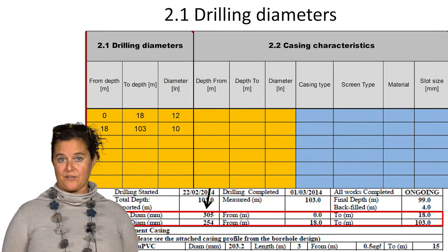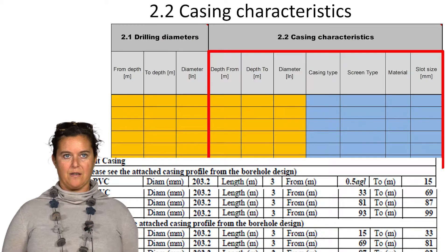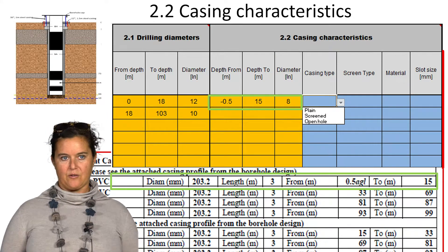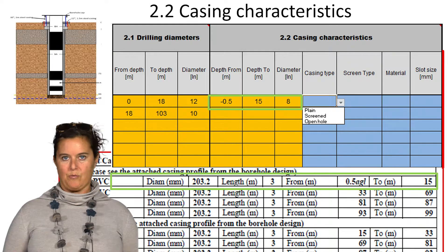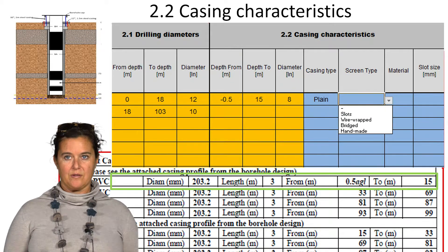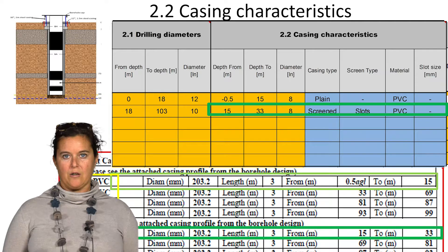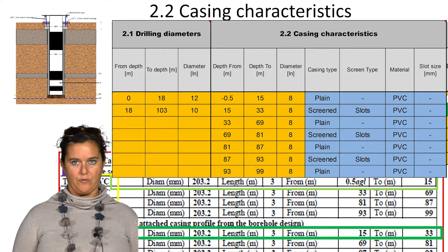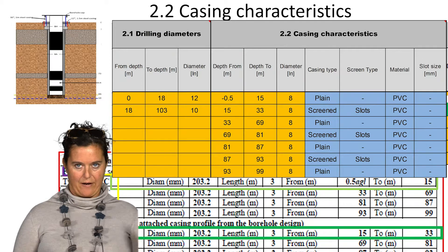We will do exactly the same for the casing characteristics. From the borehole completion report we will define the characteristics of the casings at different depths of the well, and input manually in the yellow cells the corresponding depth and diameter. Then from the drop-down menu we will choose the corresponding casing type, screen type, material, and finally the slot size. We continue for the whole depth of the borehole. If information is not available, we choose the hyphen from the drop-down menu. For plain casing sections there will be no screen type, so we select the hyphen.